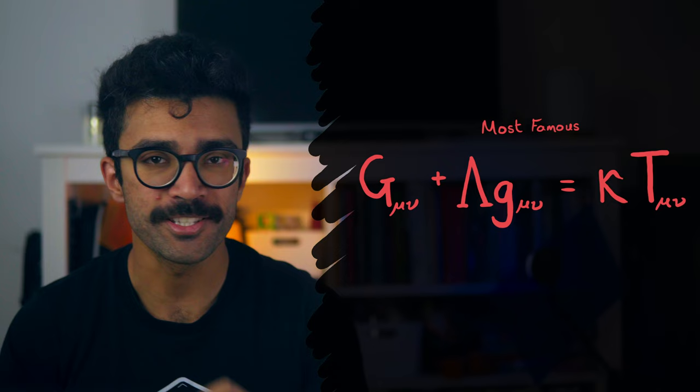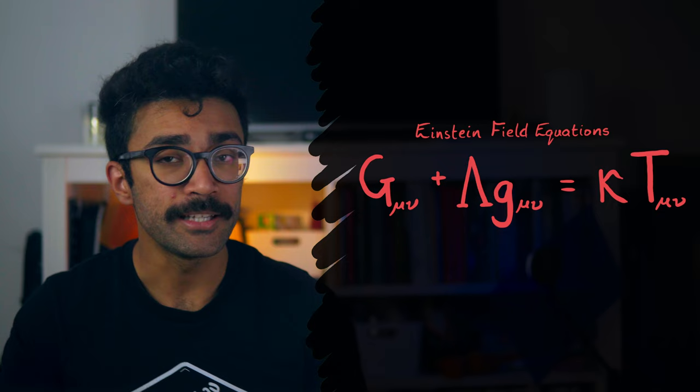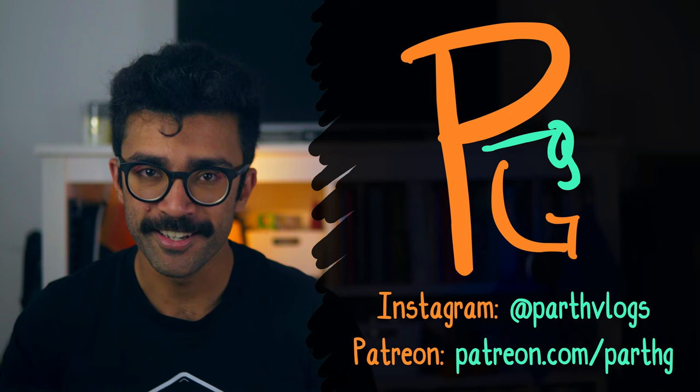Hello there, my name's Barth and in this video we'll be looking at how to solve Einstein's most famous equation. Well, second most famous after E equals MC squared. Yes, we're talking about the Einstein field equations. We'll take a look at what this equation actually says and what it means to solve it. So if you enjoyed this video then please hit the thumbs up button and subscribe for more fun physics content. Let's get into it.